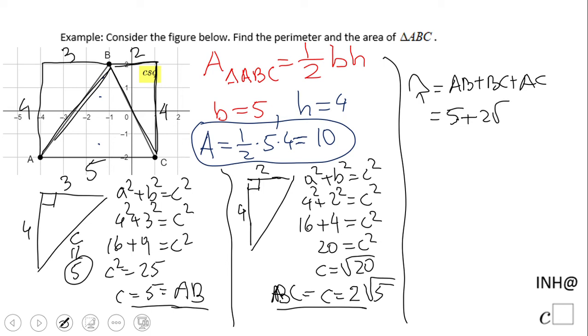AB is 5, right? BC is 2√5, and AC, the other side, is 5. So the final answer for the perimeter will be 10 + 2√5. If you need to evaluate this, you grab a calculator and evaluate and approximate if that is the case.